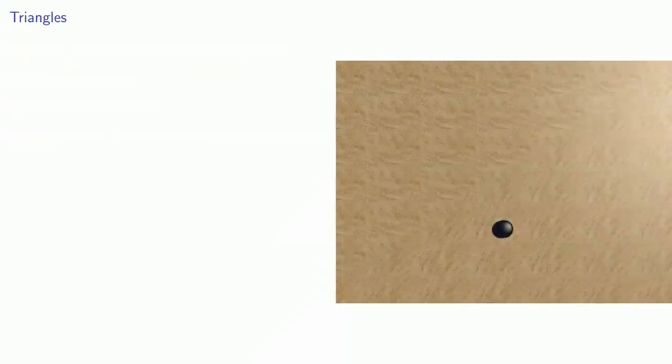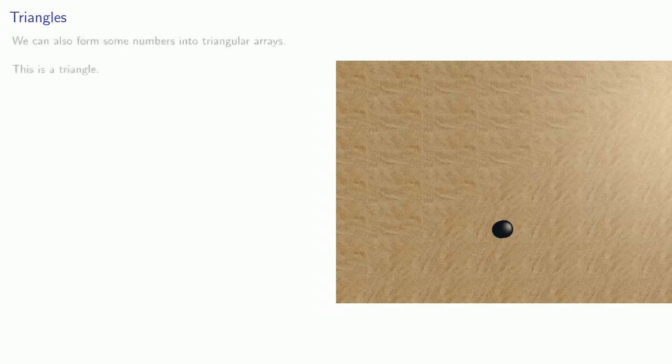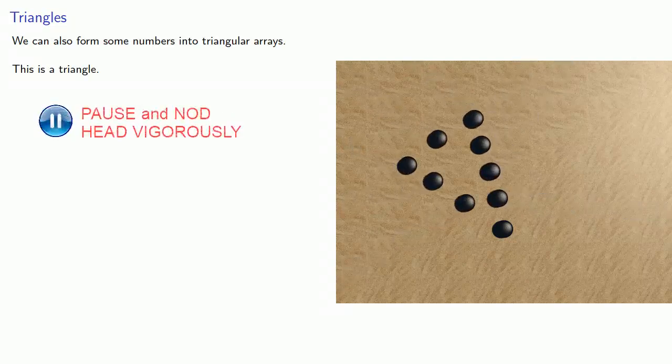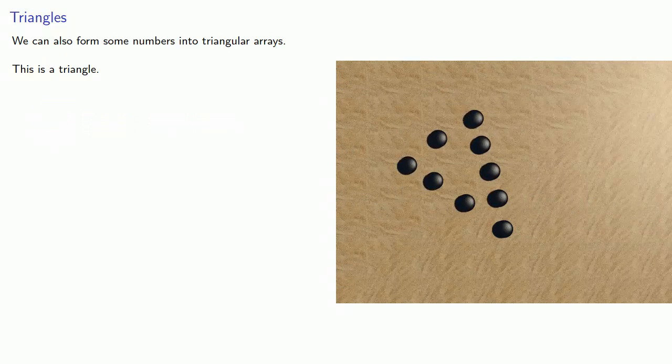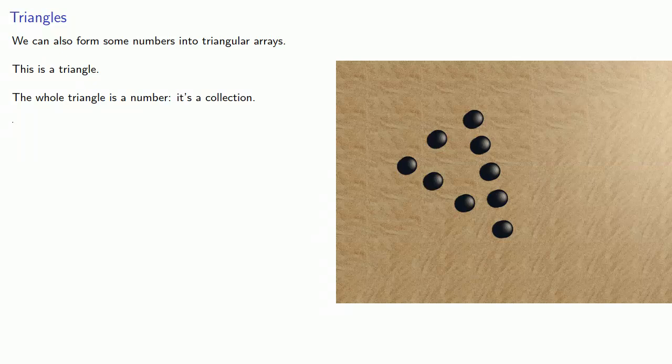Somewhat simpler, we can also form numbers into triangular arrays. So this is a triangle. The whole triangle is a number. It's a collection of units. If we take a look at the sides, we also see that the sides are also numbers. They're collections of units.